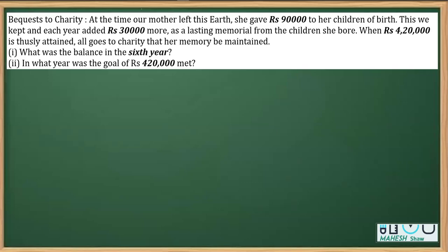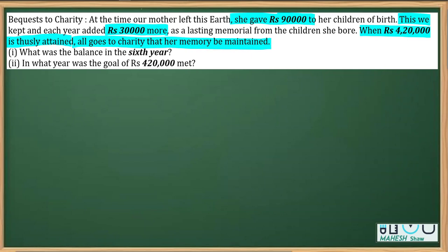This is a question from arithmetic progressions. A mother gave her child ₹90,000 at birth — considered year zero — and kept adding ₹30,000 more on each birthday as a lasting memory for the child's support. The question asks: when ₹4,20,000 is attained, she donates to charity so that her memory is maintained.